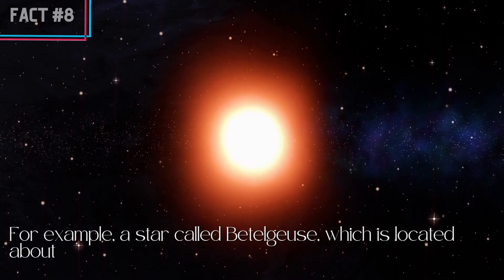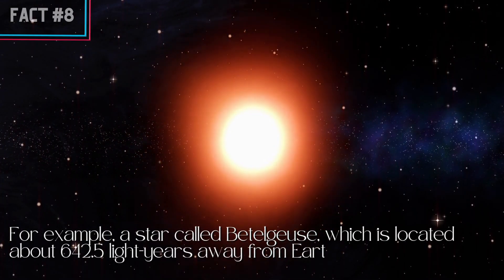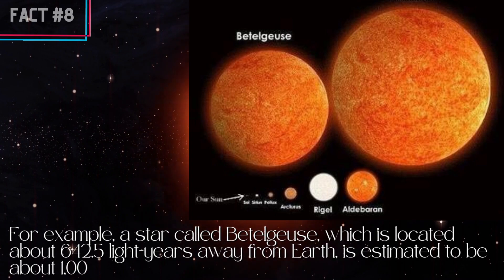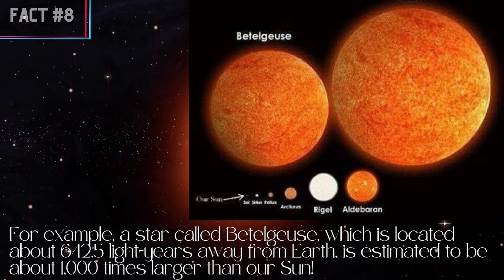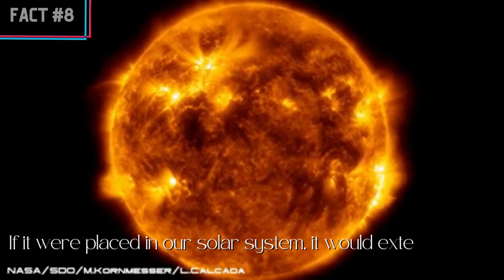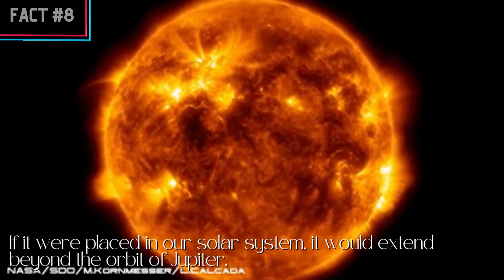a star called Betelgeuse, which is located about 642.5 light-years away from Earth, is estimated to be about 1,000 times larger than our sun. If it were placed in our solar system, it would extend beyond the orbit of Jupiter.